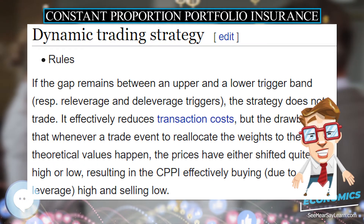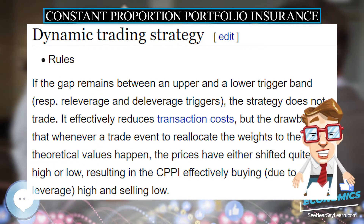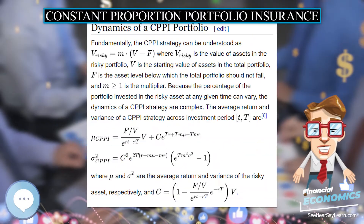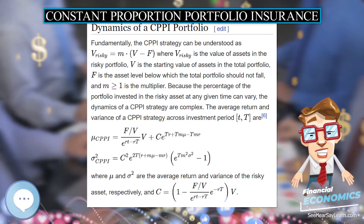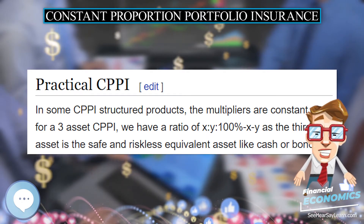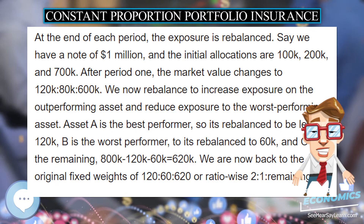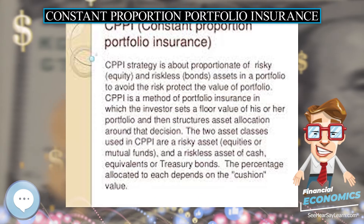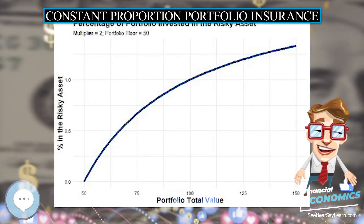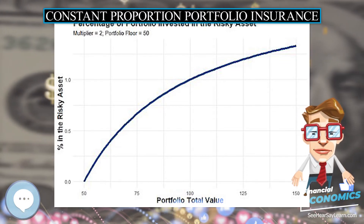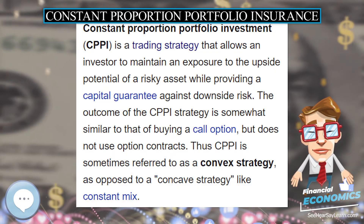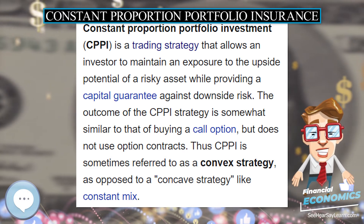If the gap remains between an upper and a lower trigger band (re-leverage and deleverage triggers), the strategy does not trade. This effectively reduces transaction costs, but the drawback is that whenever a trade event to reallocate the weights to the theoretical values occurs, prices have either shifted quite a bit high or low, resulting in the CPPI effectively buying high and selling low due to leverage. Gap risk is the main concern of the CPPI writer, since a sudden drop in the risky underlying trading instruments could reduce the overall CPPI net asset value below the bond floor needed to guarantee capital at maturity.